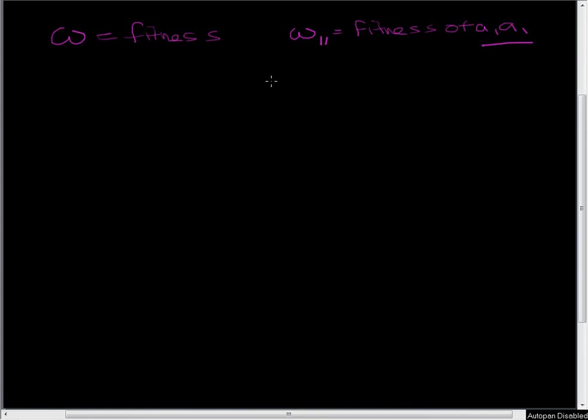Since we're thinking about frequencies, we're generally going to be setting our fitness as relative fitness. And for relative fitness, we set the highest fitness to 1 and divide everything else by the highest fitness.